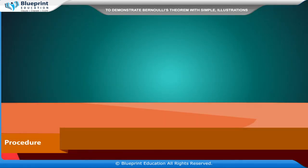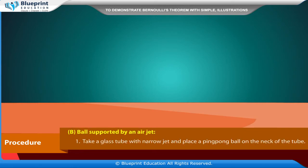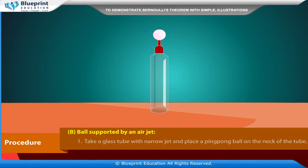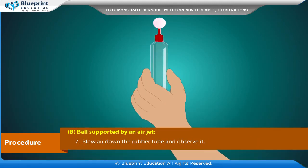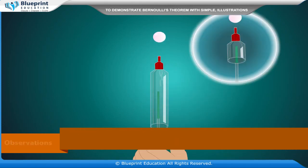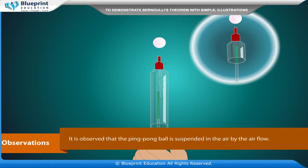The second situation is ball supported by an air jet. Take a glass tube with narrow jet and place a ping pong ball on the neck of the tube. Blow air down the rubber tube and observe it. It is observed that the ping pong ball is suspended in the air by the air flow.